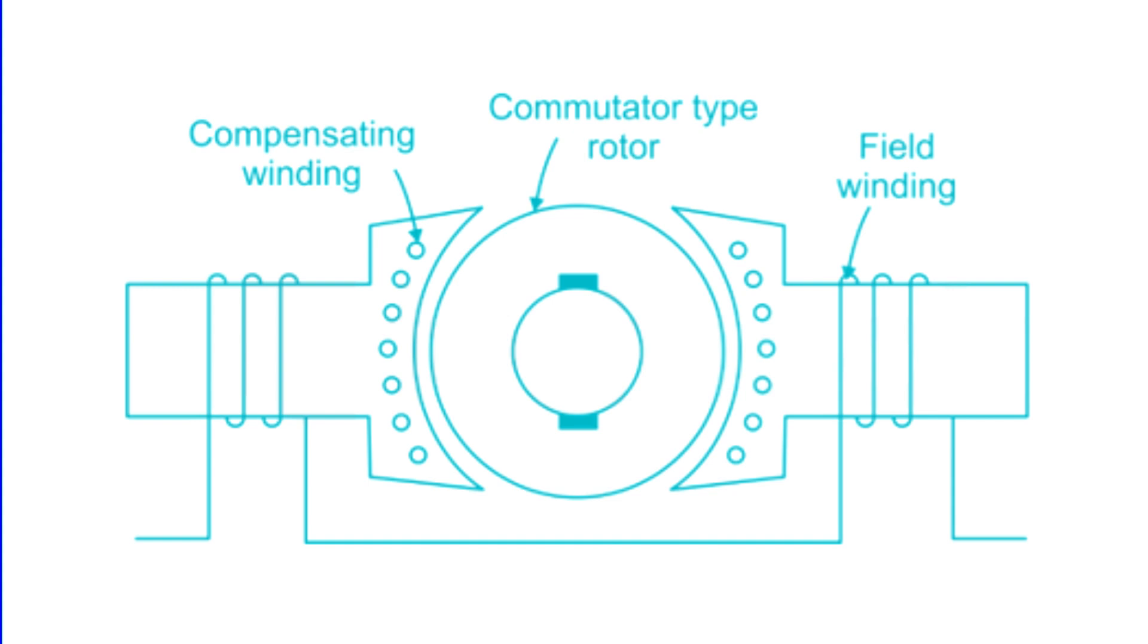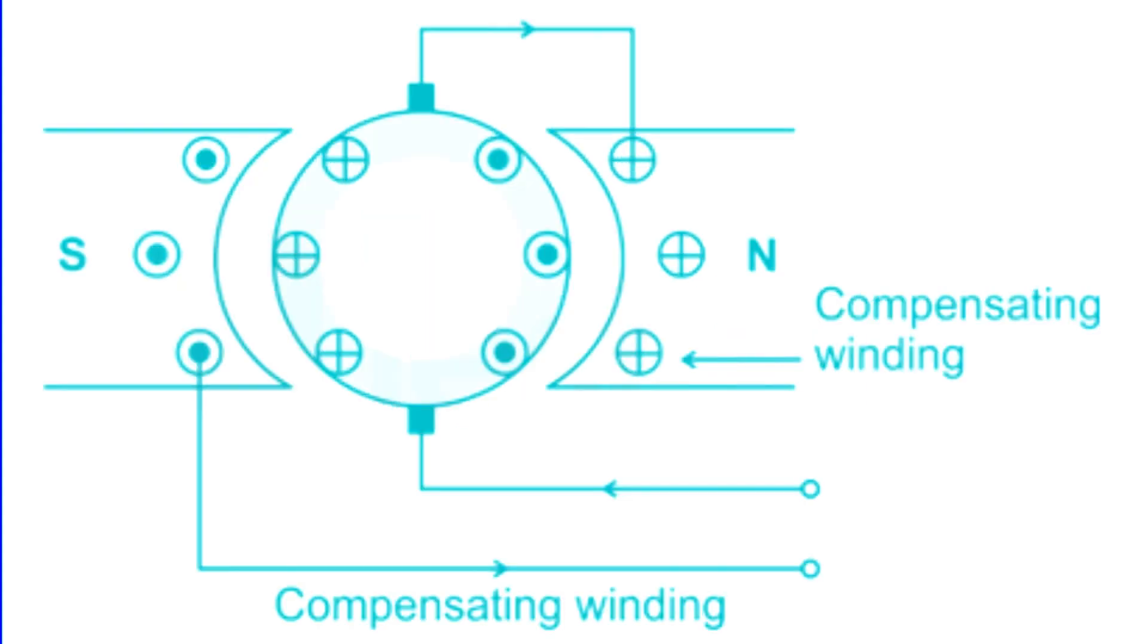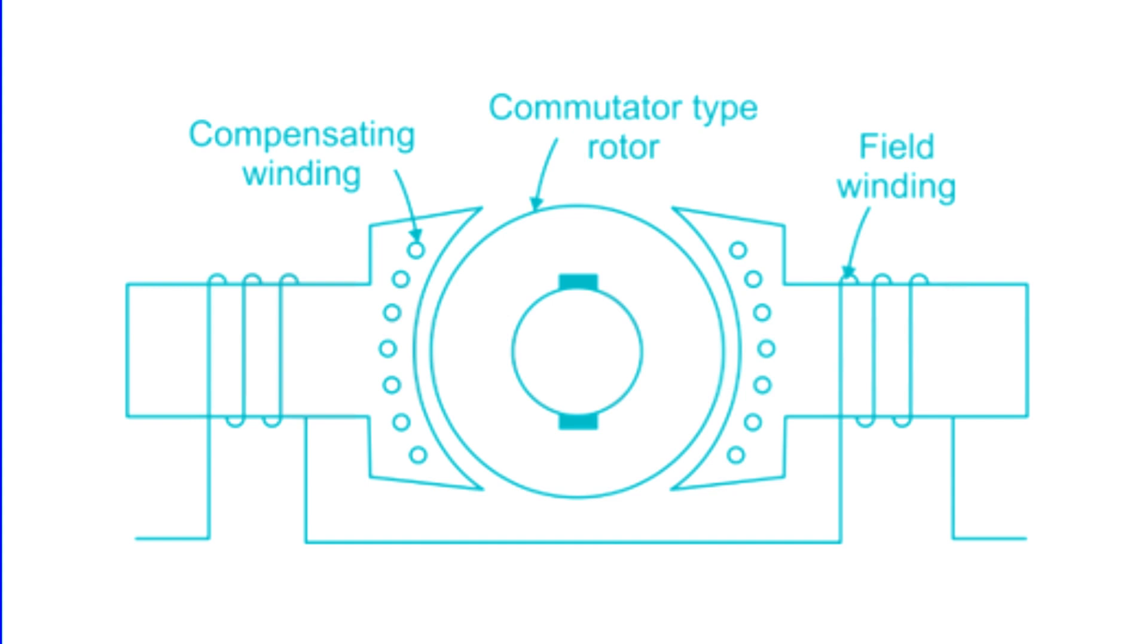Compensating windings are additional coils embedded in the pole faces of the main field poles. These windings run parallel to the armature conductors and are connected in series with them. Their primary role is to counteract the distortive effects of the armature magnetic field on the main field, especially under high current conditions. This is crucial because without them, the increased armature flux can lead to serious commutation problems. By placing these windings close to the armature, they effectively neutralize the cross-magnetizing effect of the armature current.